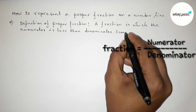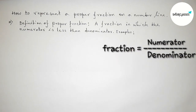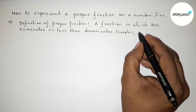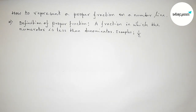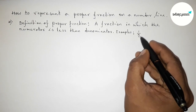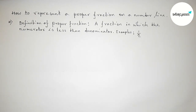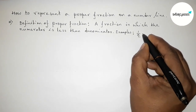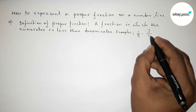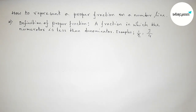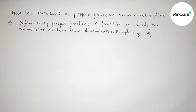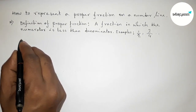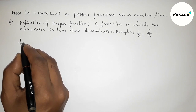Let's take some examples to clear the concept. First example: 1 by 2 — here 1 is the numerator and 2 is the denominator, and 1 is less than 2. Another example: 3 by 4 — here 3 is the numerator and 4 is the denominator, and 3 is less than 4. This type of fraction is called a proper fraction.